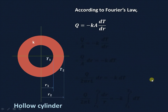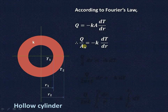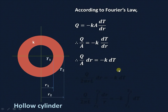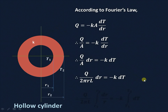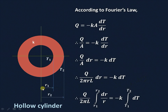is given by minus K dT by dr, where R is the variable. Transferring A to the other side, the heat flux is equal to minus K dT upon dr. Transferring dr also, we get Q upon A dr equal to minus K dT. The surface area of the cylinder is perimeter into length, that is 2πr times L, so Q upon 2πrL dr equals minus K dT.